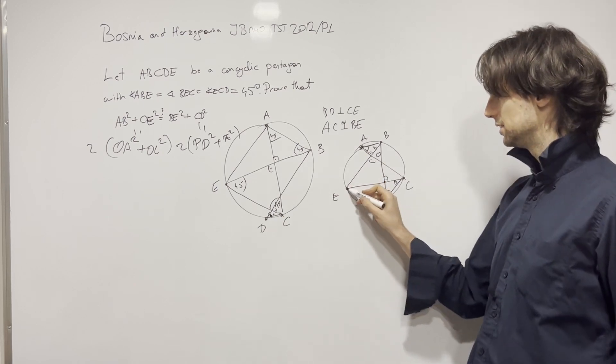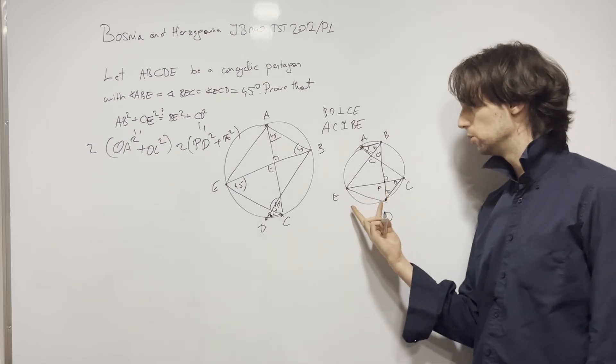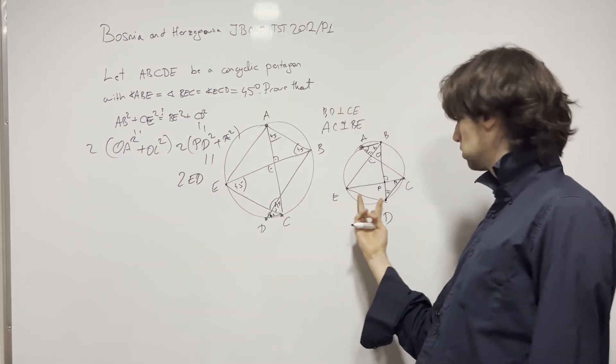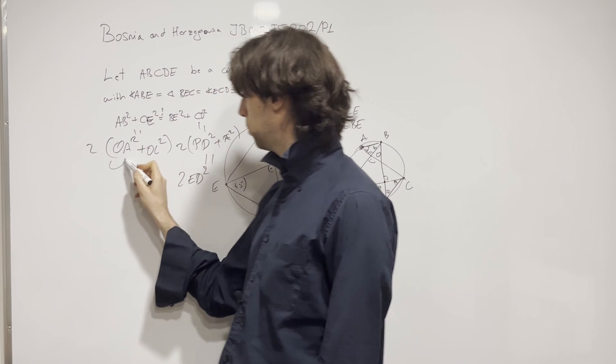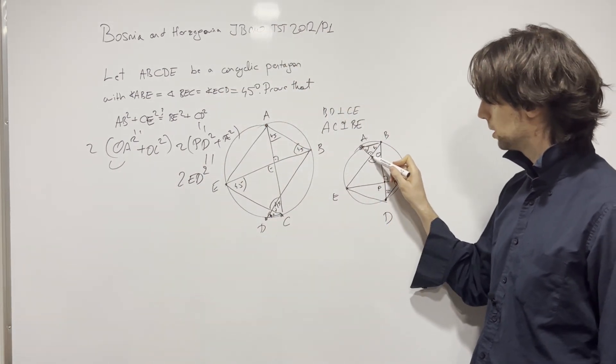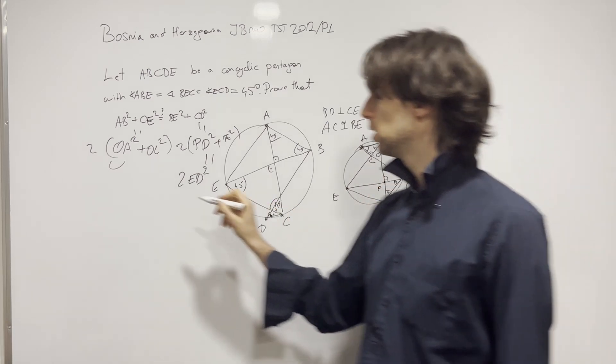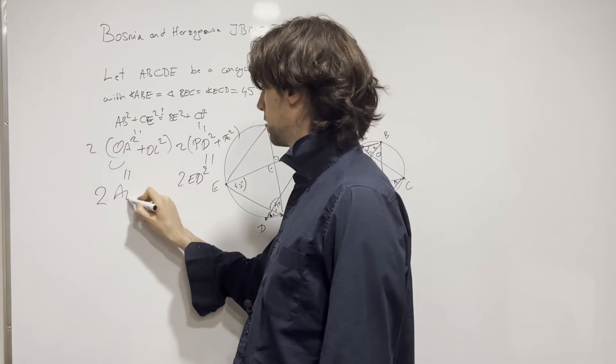What is now PD squared plus PE squared? Now, I'm seeing this. This is equal to what? Well, it's equal to two times, two times ED squared. And then what about here? We have OA plus OA squared plus OC squared. Well, we can look at this as OA plus OE. OA squared plus OE squared, which is going to give us two times AE squared.